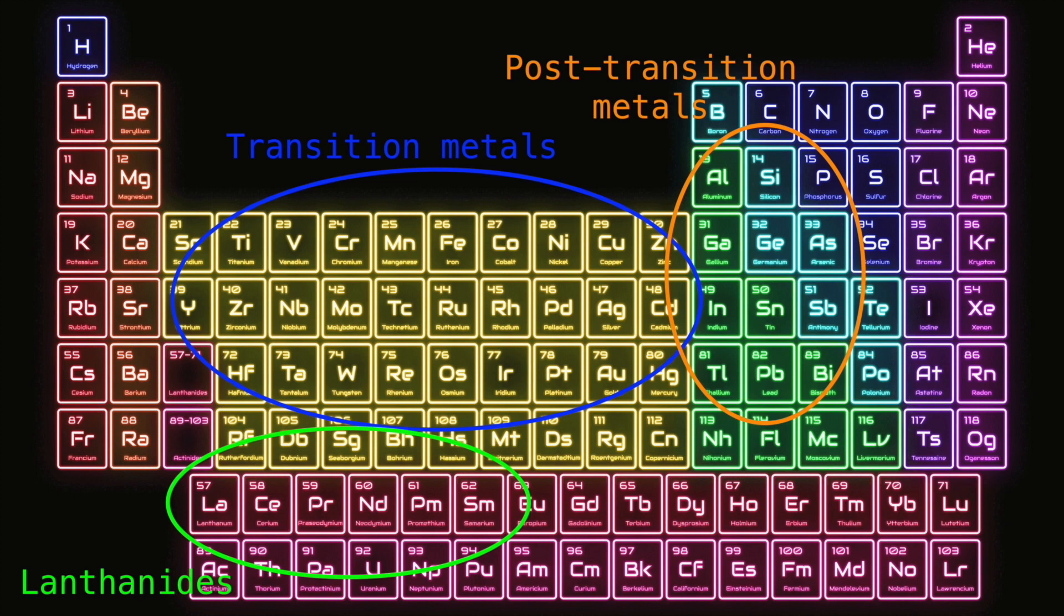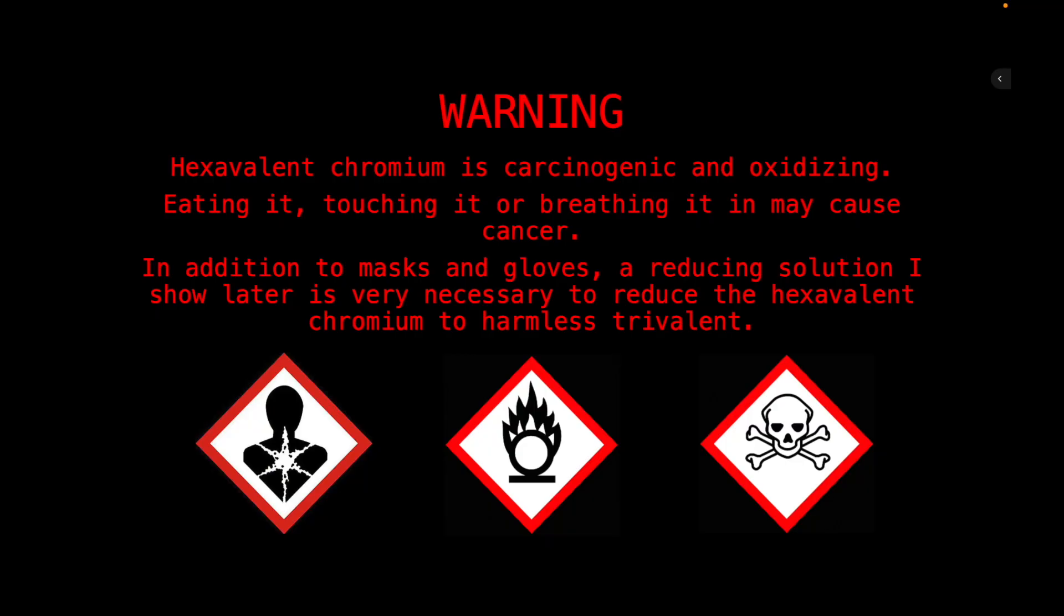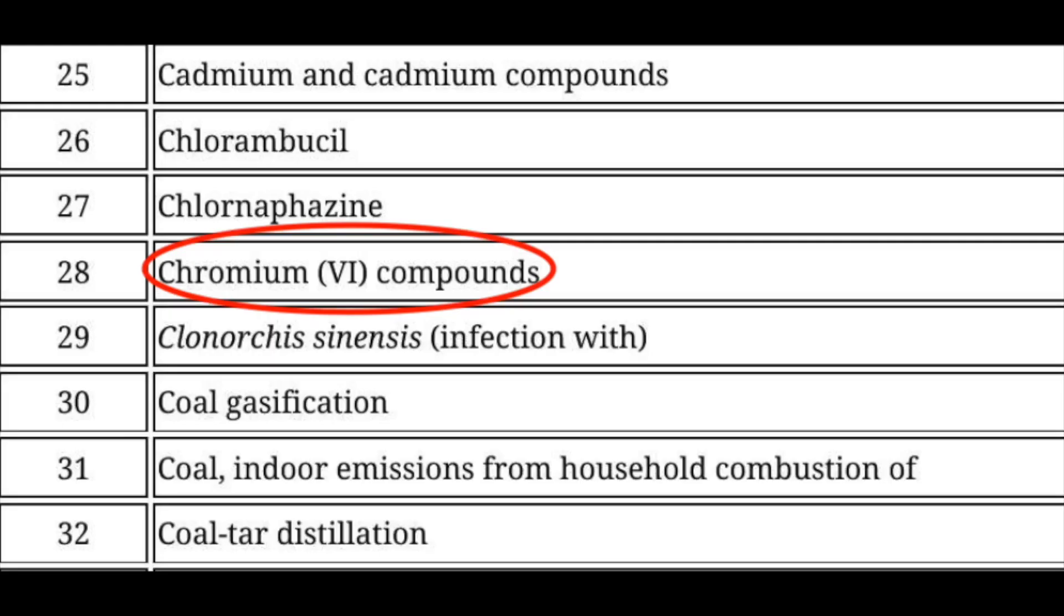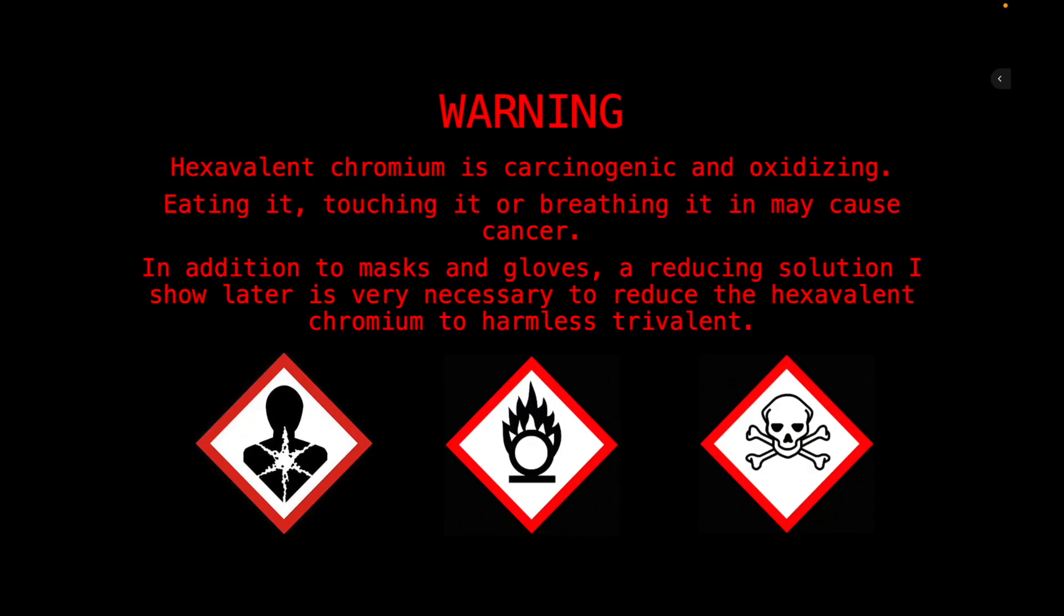Today we are making some dichromates by electrolysis. But wait. Hexavalent chromium is very dangerous. It is a known carcinogen to humans, type 1 in the WHO list of carcinogens. Eating it, touching it, or breathing it in may cause cancer. In addition to masks and gloves, a reducing solution isolator is very necessary to reduce the hexavalent chromium to harmless trivalent.